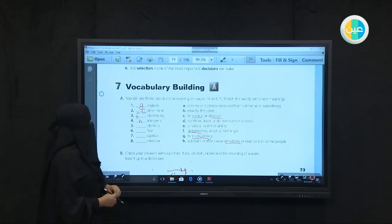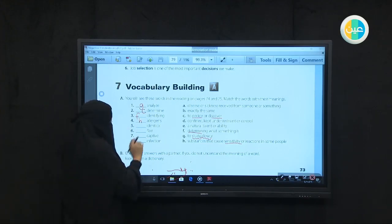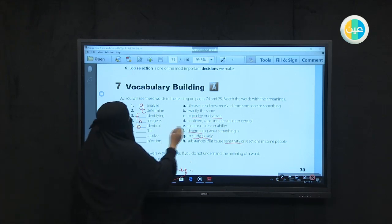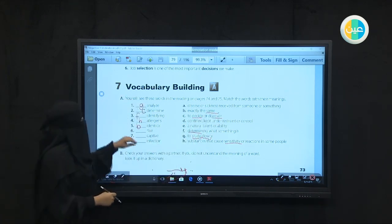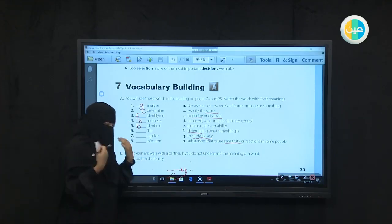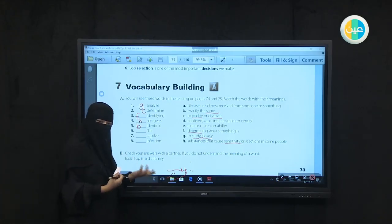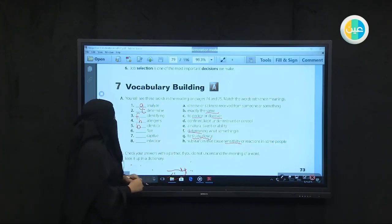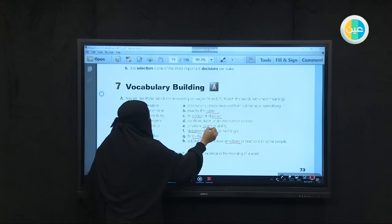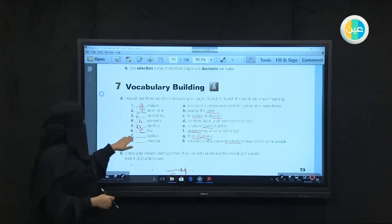Number 5, identical - when something is exactly the same, very similar. It is exactly the same. So your answer will be B - you can connect it with the word same. Number 6, flair is something that you have in you and it's usually related to a talent or skill that God gave you. So it's a natural talent or ability. It will be E here. You can connect flair with talent - a gift or skill.